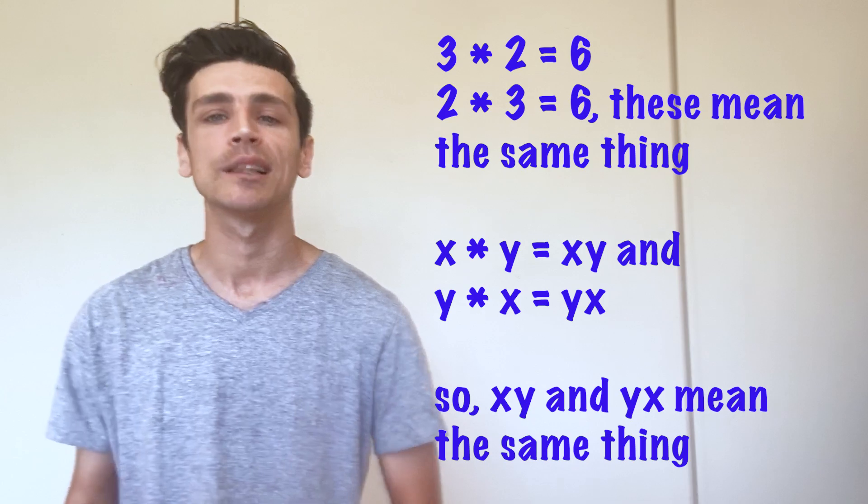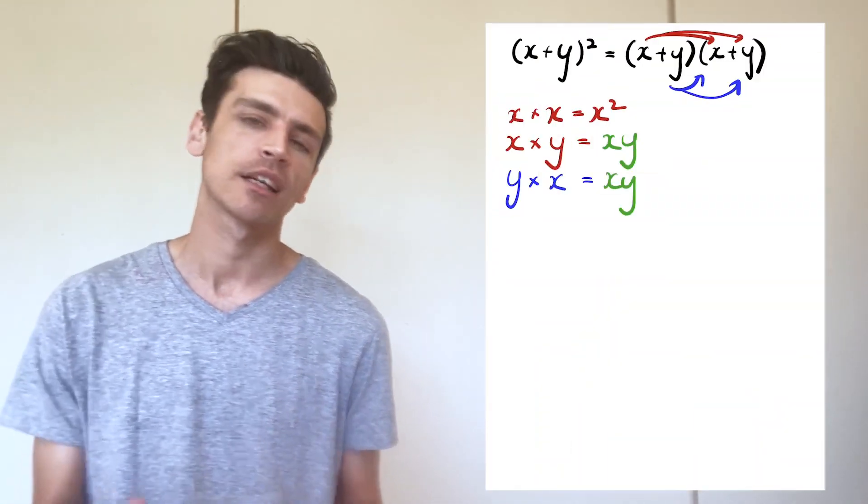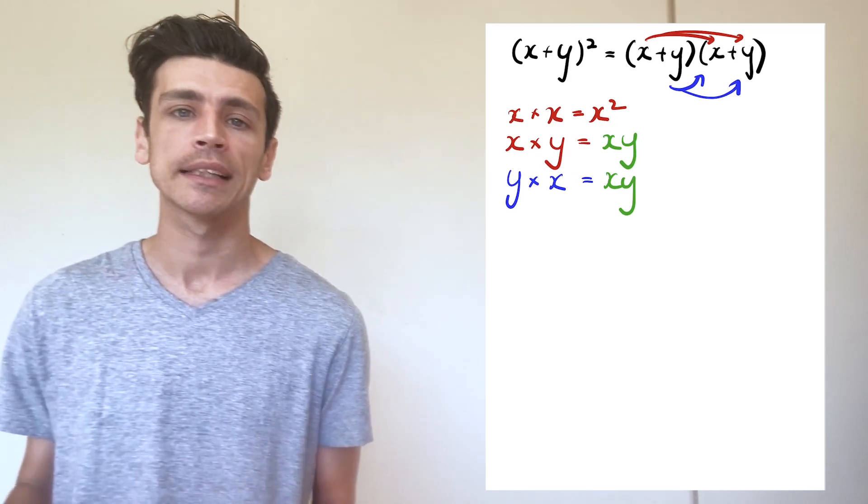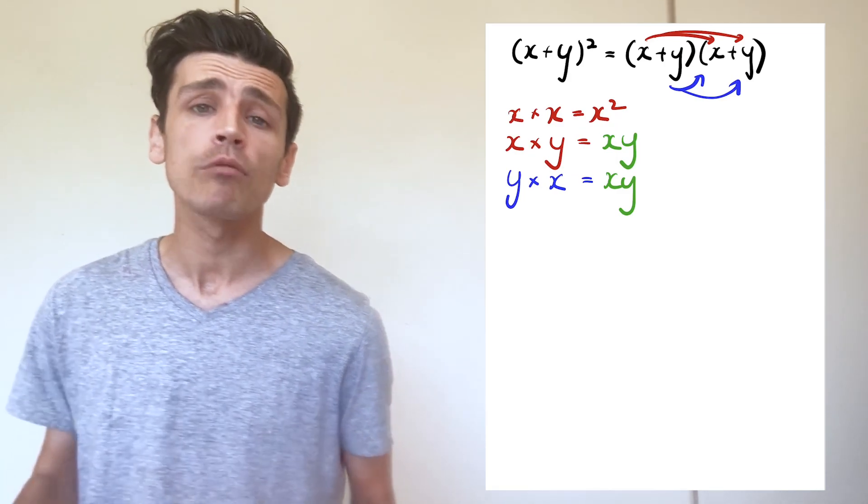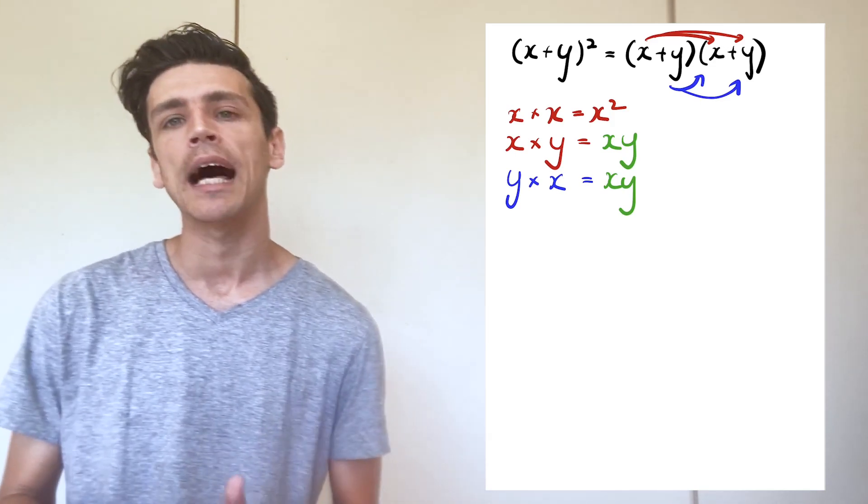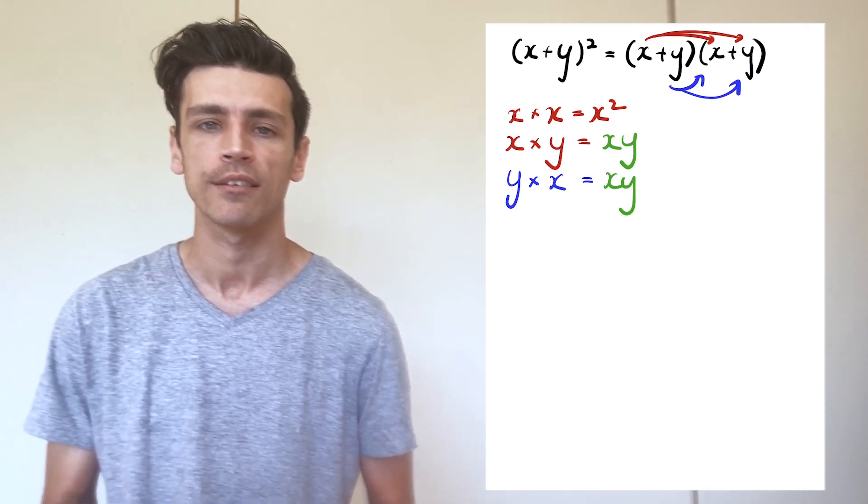In this case, x goes before y in the English alphabet, so I usually try to keep it as xy. So y multiplied by x would give me xy. If you did write it as yx, it means the exact same thing, it just becomes harder later on when we're trying to find like terms.